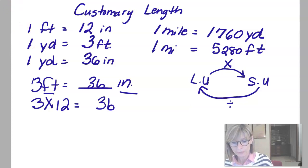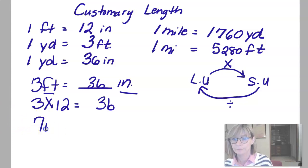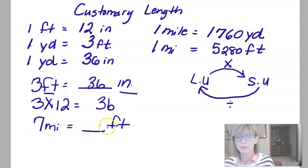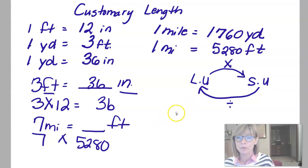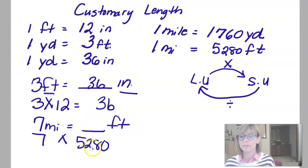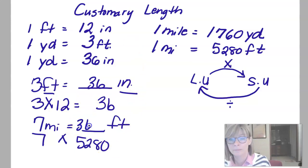Let's try another problem: 7 miles is equal to how many feet? I'm going from a larger unit to a smaller unit, so I'm going to multiply 7 times how many feet are in 1 mile. There are 5,280 feet in a mile, so I'm going to multiply those two numbers. Using Google Assistant: 7 times 5,280 is 36,960.